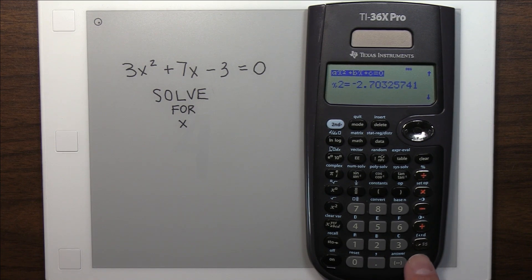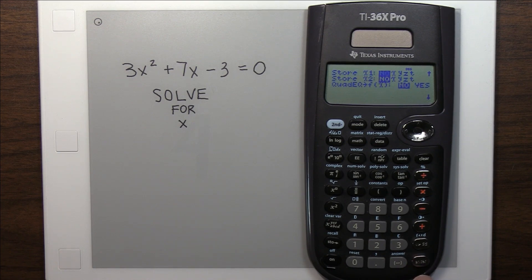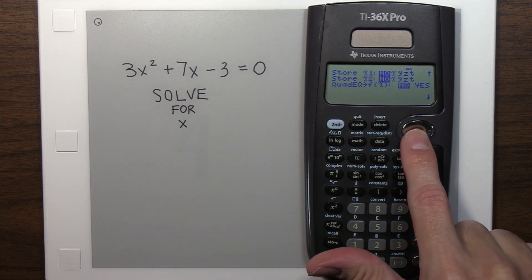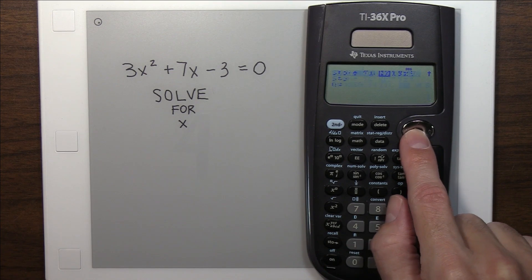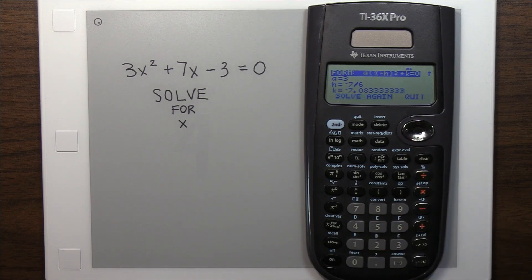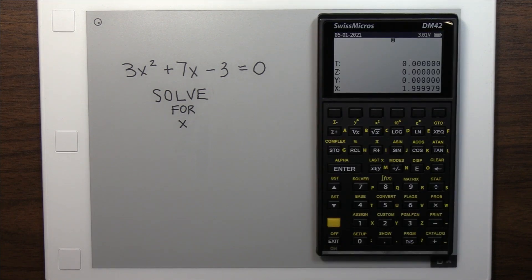And something this calculator does that I haven't yet implemented on the DM42. And if you go down to the next screen, it shows you the leading coefficient, which we already knew, the A value. And it gives you the coordinates of the vertex, which is nice. I realized that if I wanted to use this calculator, I needed to add some of these functions.